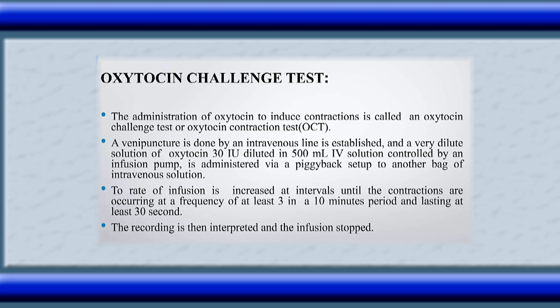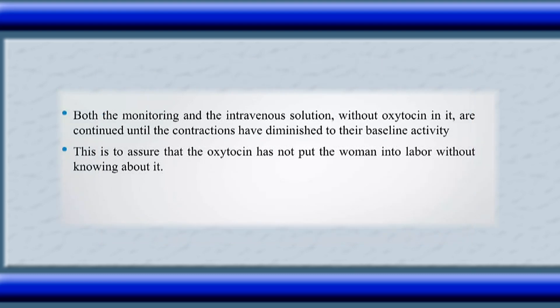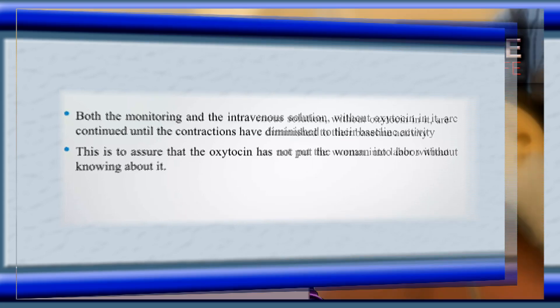The record is then interpreted and the infusion stopped. Both the monitoring and the intravenous solution without oxytocin are continued until contractions have diminished to their baseline activity. This is to assure that the oxytocin has not put the woman into labor without knowing about it.